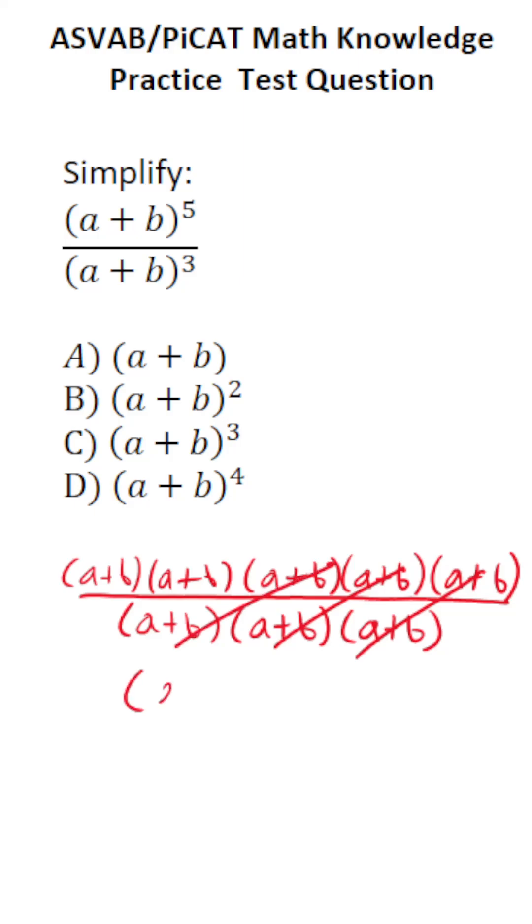And this leaves me with (a + b) times (a + b) in the numerator by itself. And we have (a + b) times itself twice. So that's the same thing as (a + b) squared. So this one simplifies to B, (a + b) squared.